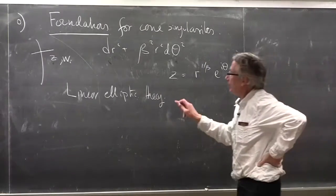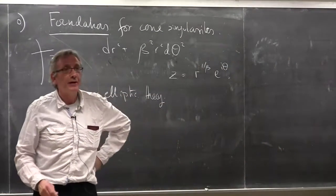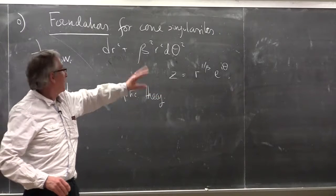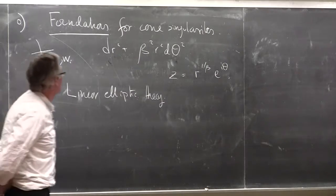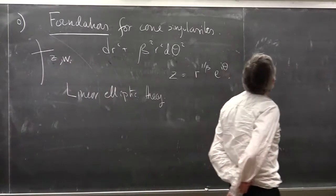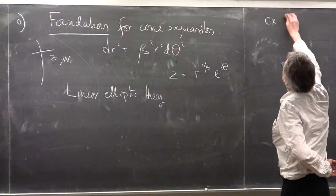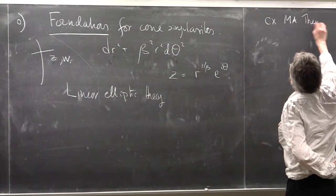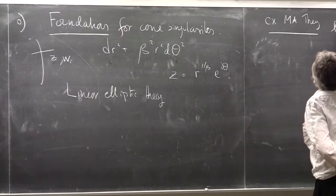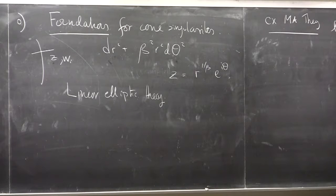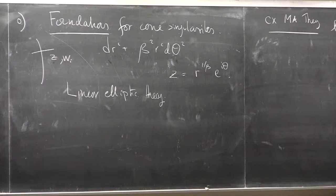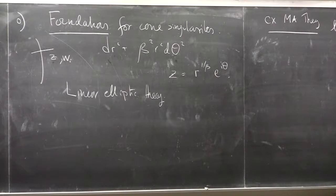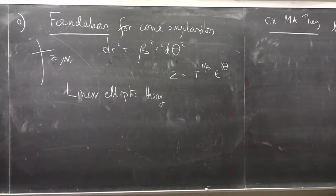We're not going to attempt to define elliptic theory for arbitrary operators. We want to consider really very specific operators. The crucial operator in this complex Monge-Ampère theory, the crucial linear operator is the composite of d bar d with the inverse of the Laplacian. Why is this relevant?